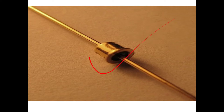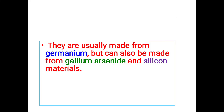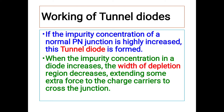This is the practical appearance of the tunnel diode — the practical diode will look like this figure. Tunnel diodes are usually made from germanium, but they can also be made from gallium arsenide as well as from silicon materials.